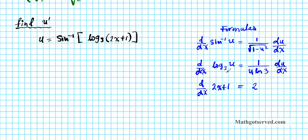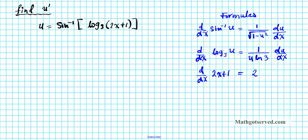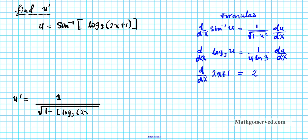Now let's apply these formulas to find u'. Starting from the outermost function, differentiating the arc sine while holding the inside fixed gives 1 over the square root of 1 minus u squared, where u is log base 3 of 2x plus 1. So we get 1 over the square root of 1 minus log base 3 of 2x plus 1, that quantity squared.